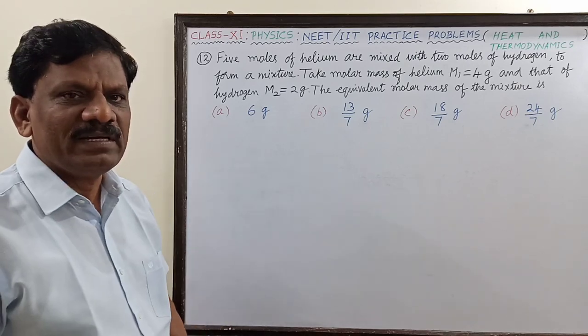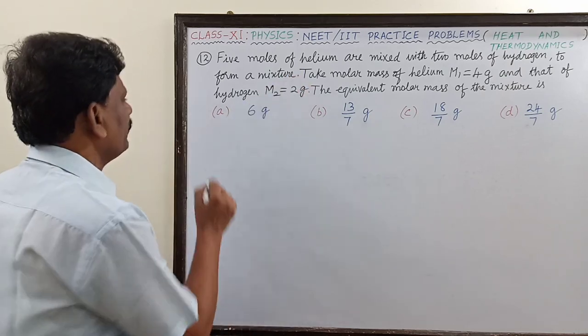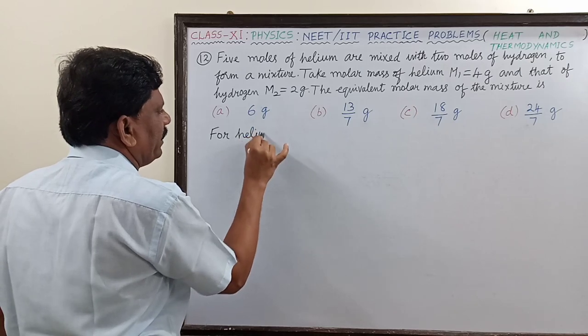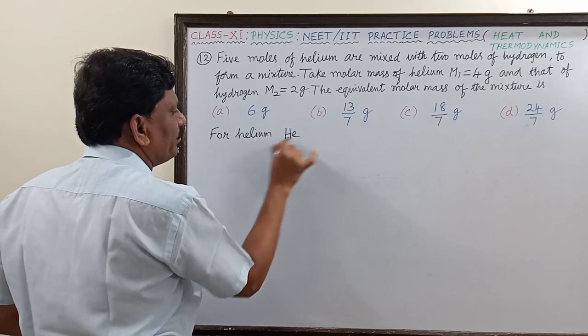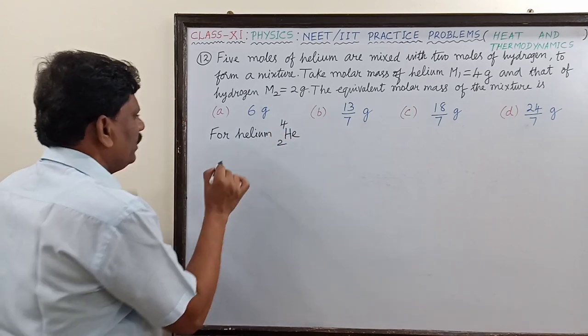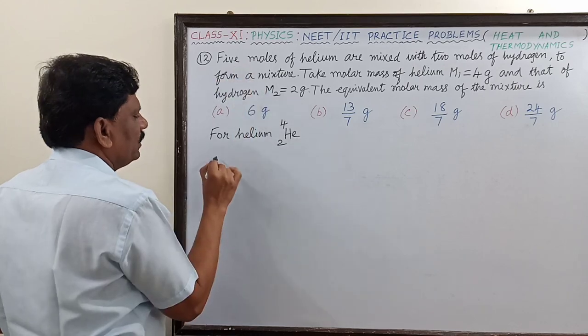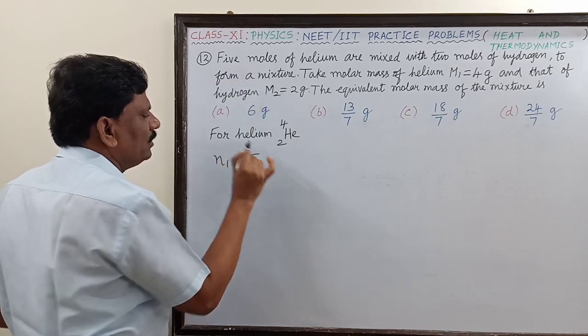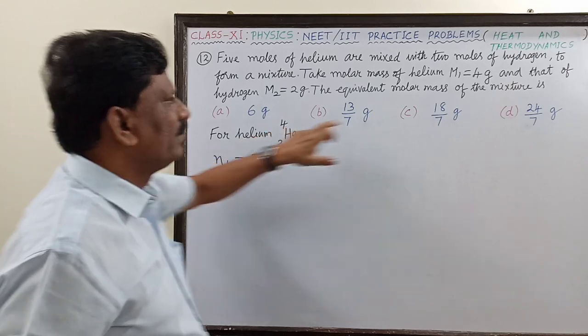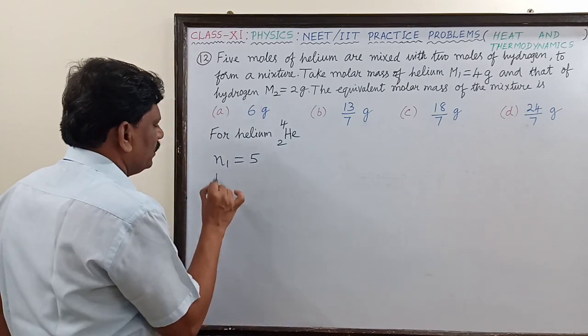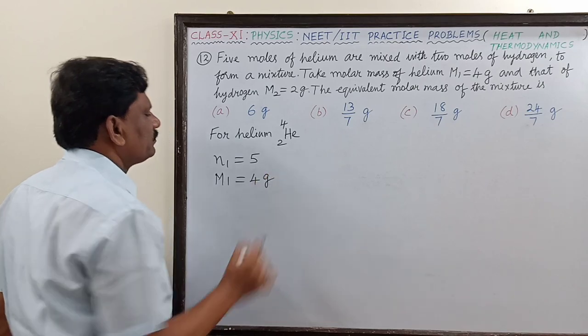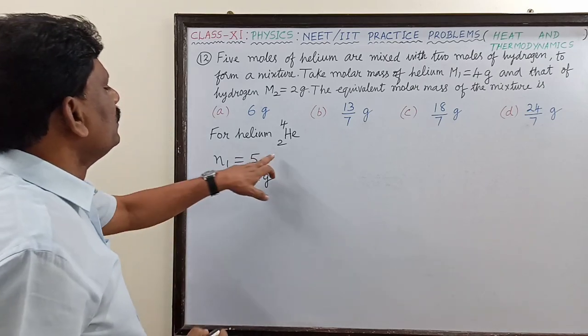First of all, what are the two given gases? Let us see. One is helium, so for helium we write it simply like this: He-4. The number of moles is given as 5, so N1 equals 5. Then molar mass is 4 grams. M1 equals 4 grams.